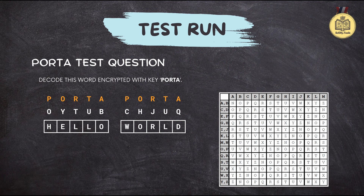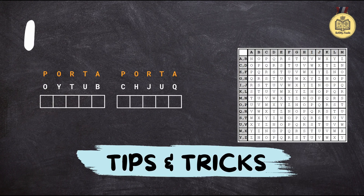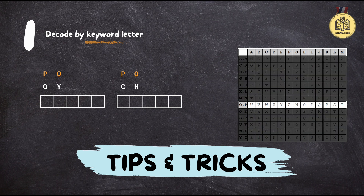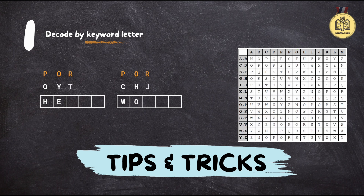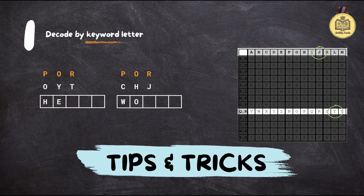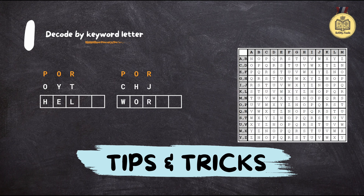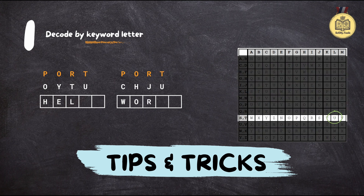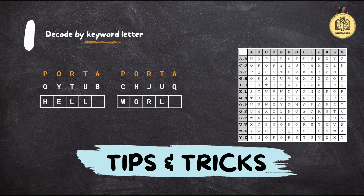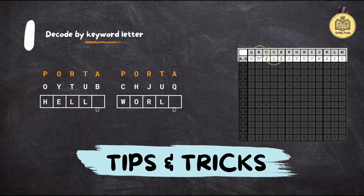Here are a few tips to help you master the cipher, especially in a timed competition like CodeBusters. Remember how we align the keyword with the ciphertext? Try decoding by keyword letter. If your keyword is five letters long, instead of going letter by letter through the ciphertext, decode all the letters associated with the first keyword letter, then move to the second keyword letter and decode the seventh, twelfth letters, and so on. This way you're working in chunks and it's faster and less prone to errors.